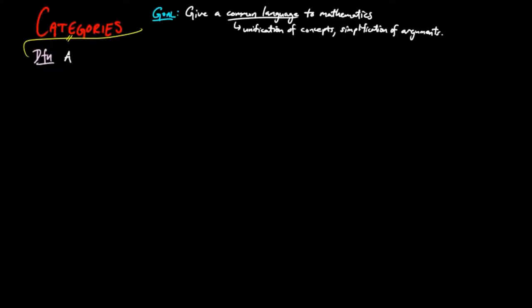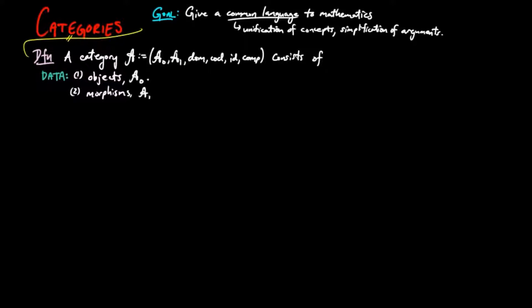We begin with the definition. Category A consists of data, which are objects A0 and morphisms A1.